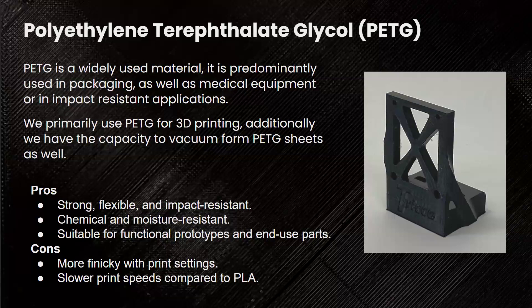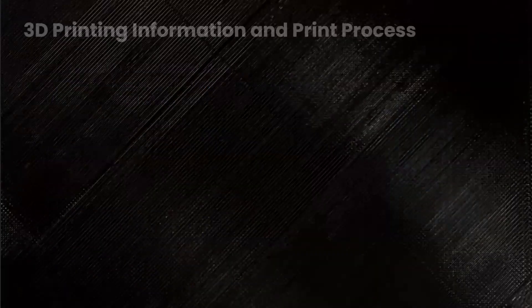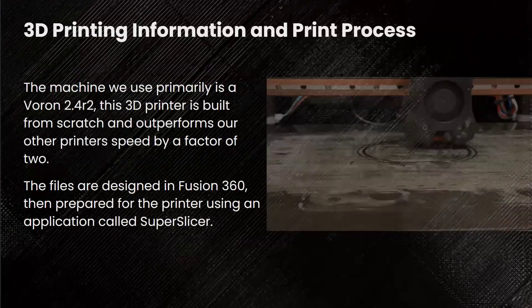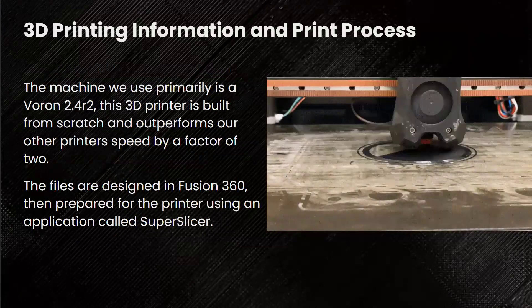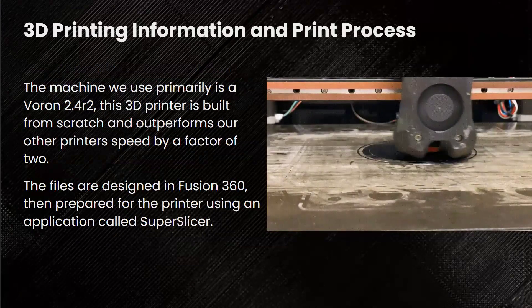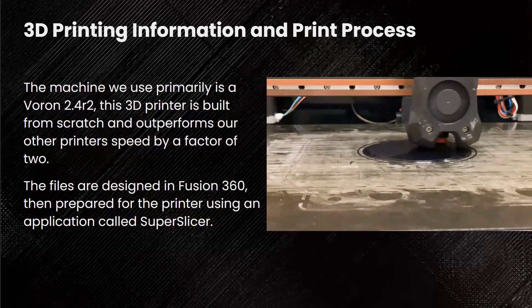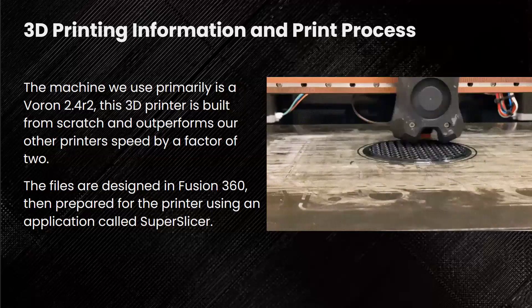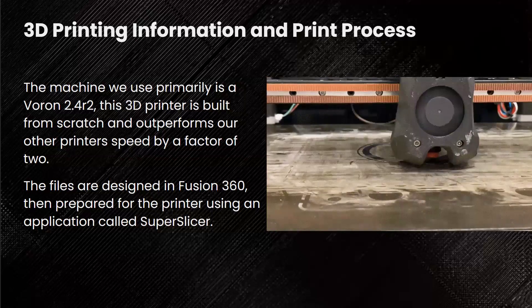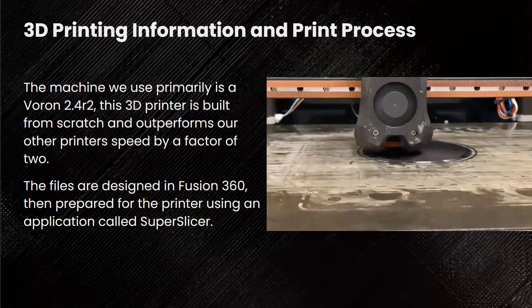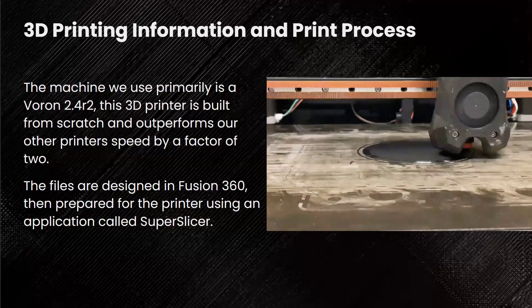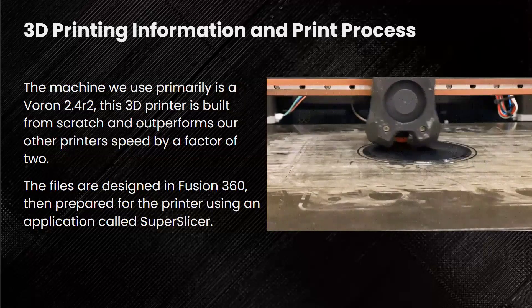PETG also has slower print speeds compared to PLA, which is polylactic acid — a very general, easy-to-use 3D printing plastic. PETG is more difficult to use but a lot better when you get it right. This printer is one that I built called the Voron 2.4 Revision 2 — it's an open-source 3D printer. We ordered all the parts and built it, and it outperforms all our other printers by a factor of two. I design files in Fusion 360, prepare them using a slicer called SuperSlicer, which takes a 3D model, cuts it into layers, and converts those layers into positional information the printer can understand.